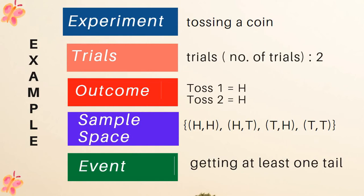On your second toss, it appears again head, that is an outcome. The sample space when you toss two coins is the set of head-head, head-tail, tail-head, and tail-tail. An example of an event when you toss a coin is getting at least one tail.